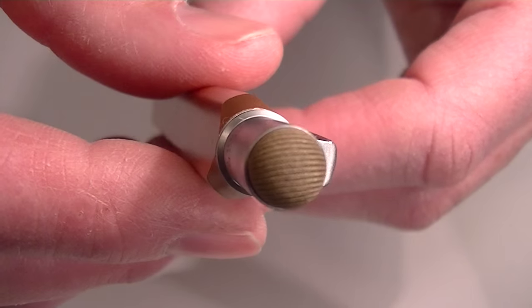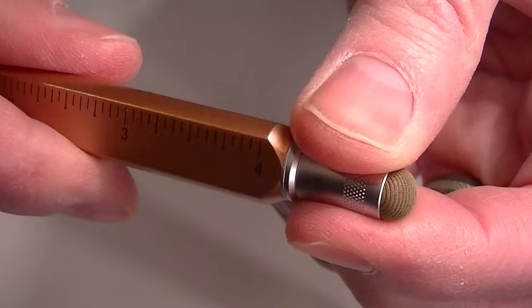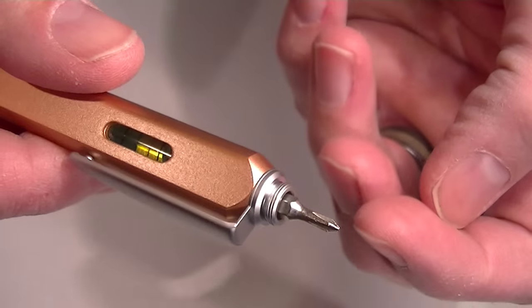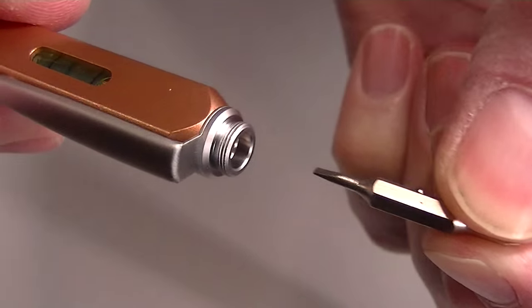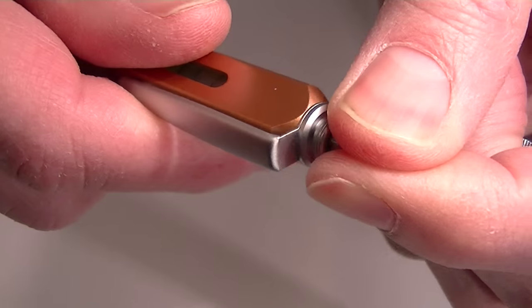It has a stylus on the end of the cap. That cap screws off, and underneath is a Phillips screwdriver that flips around for a standard screwdriver as well.